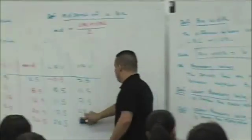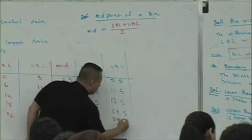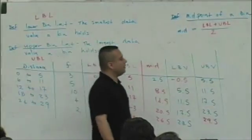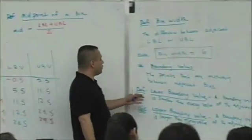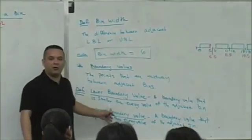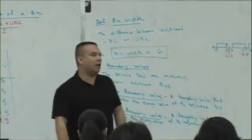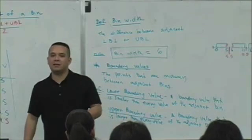Maybe we'll put this in red too. A 29.5. Now you may say, but wait a minute, this is going to violate your definition of boundary values, because you have to have adjacent bins. You're right.